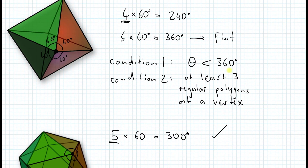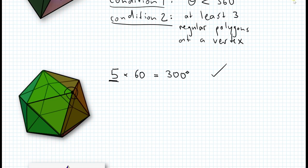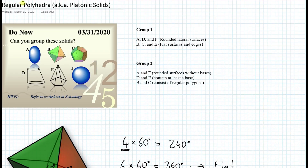The reason is because of these two conditions. At each vertex, the sum of all angles created by the vertices of the regular polygons has to be less than 360 degrees, and at least 3 regular polygons must meet at each vertex to create an enclosed figure. So that's basically it for today on the lesson on regular polyhedra — please keep in mind that regular polyhedra consist of regular polygons, also known as platonic solids, and there are only 5 of them.